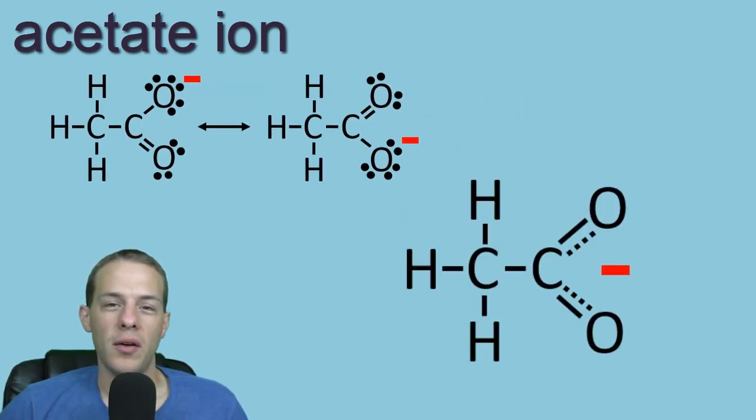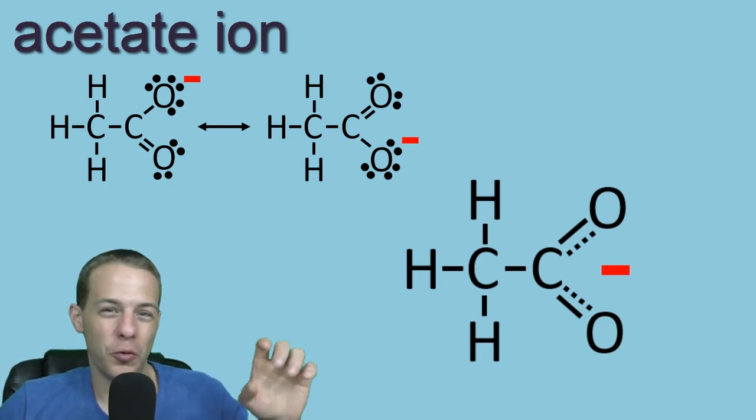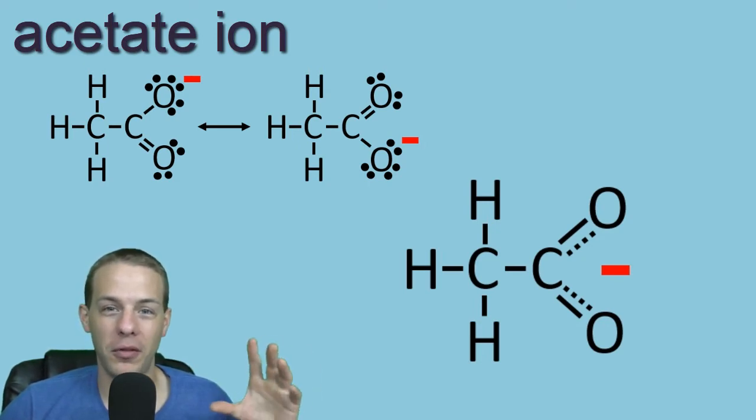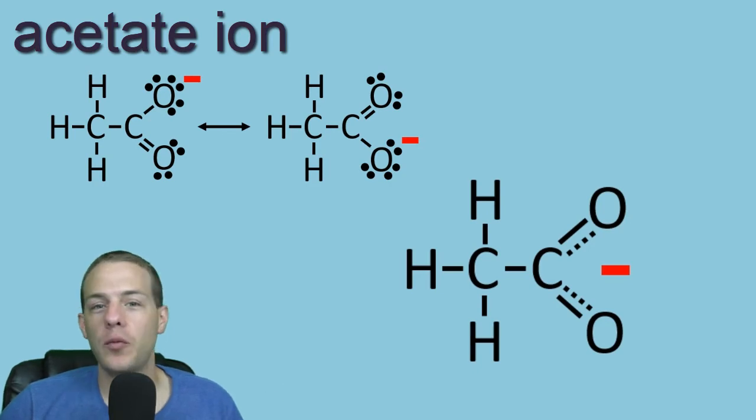Oftentimes you'll see the acetate ion represented by this sort of notation here, where instead of any one of those oxygen atoms having a double bond with the carbon, instead it's like this dotted line where they both sort of have a double bond and that negative charge is sort of just delocalized among that entire thing. I really like this notation a lot, but it does kind of violate the rules of Lewis dot structures because Lewis dot structures, you're only dealing with dots and now you have this dotted line.